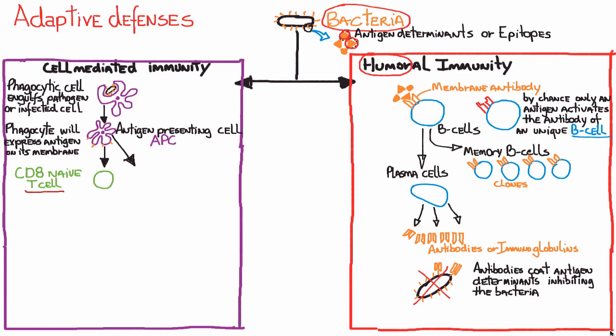The two groups are the CD8 naive T cell and the CD4 naive T cell. CD8 and CD4 stand for cell differentiation factors — proteins found on the surface of these lymphocytes that place them into one population or the other. The CD8 naive T cell can become a memory cytotoxic T cell, just as B cells in humoral immunity became memory B cells — giving your body immunological memory for future infections.